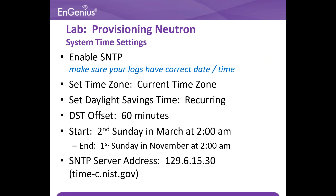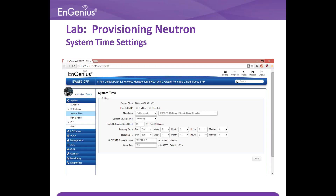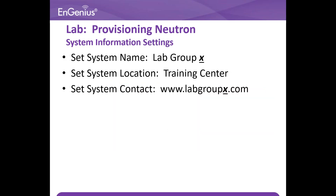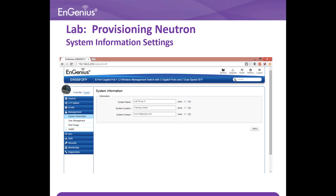Setup the SNTP to the correct time zone. This is the page for the system time setting. You can choose manual or use NTP server to sync if the switch is connected to the gateway. Change the system information for the switch for this test. This can be done on the switch system information page.